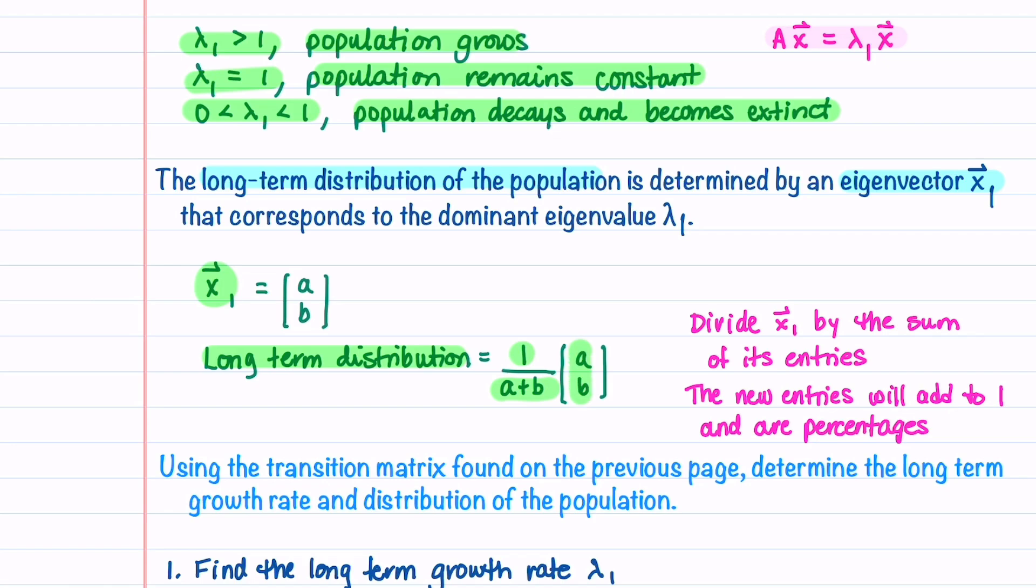This formula tells us to find the long-term distribution, all you do is divide your eigenvector x_1 by the sum of its entries. The new entries will then add to 1 and can be viewed as percentages.